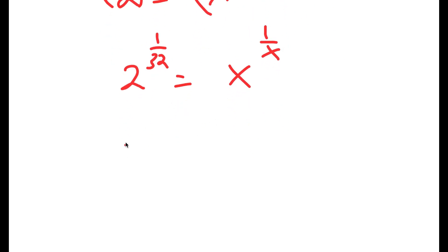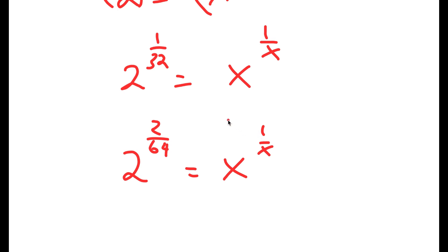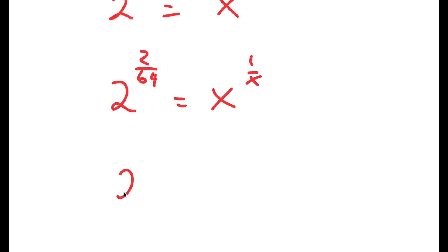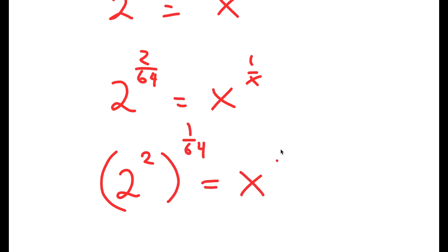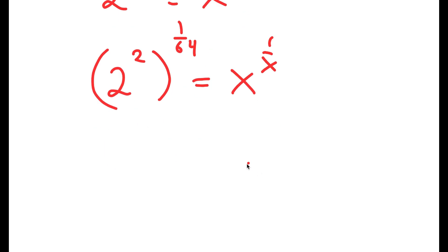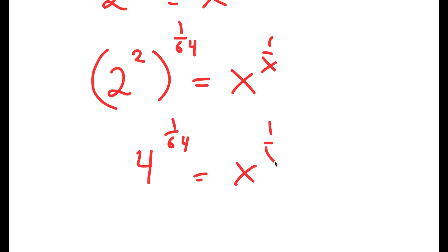Now, 1 over 32 is the same thing as 2 over 64, and this is the same thing as 2 squared to the power of 1 over 64. And 2 squared is equal to 4, so I get 4 to the power of 1 over 64 is equal to x to the power of 1 over x.